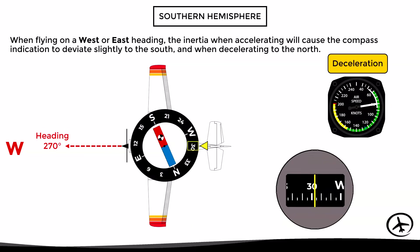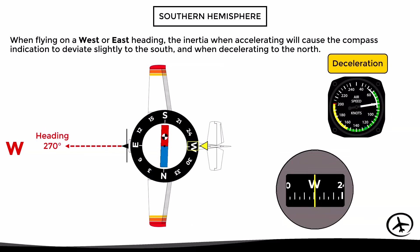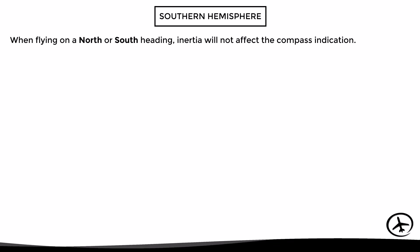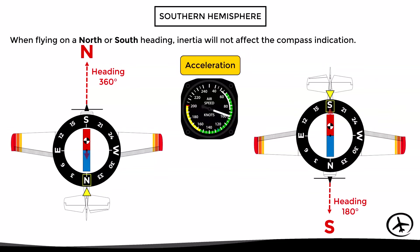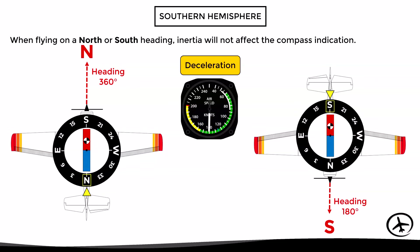Just like in the northern hemisphere, if the aircraft flies with a north or south heading, inertia will not affect the heading indication, meaning there will be no acceleration or deceleration errors. This is because the center of gravity, the pivot point, and the inertia are aligned with each other.